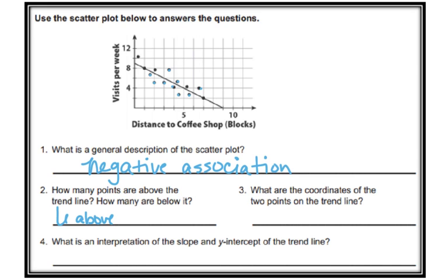Number three: What are the coordinates of the two points on the trend line? On the trend line, we've got this point here and this point down here. The coordinates for this top one would be (1, 8), and for this one down here, (7, 2).